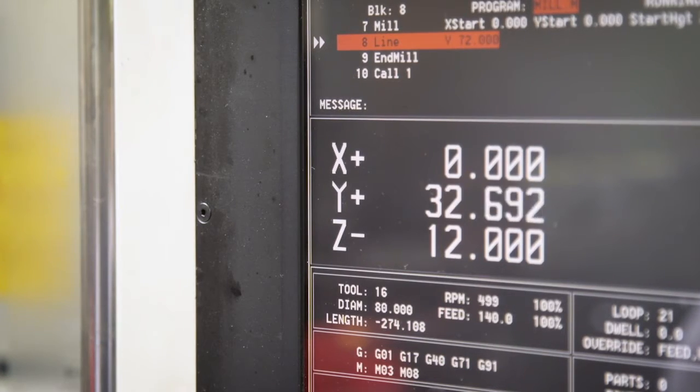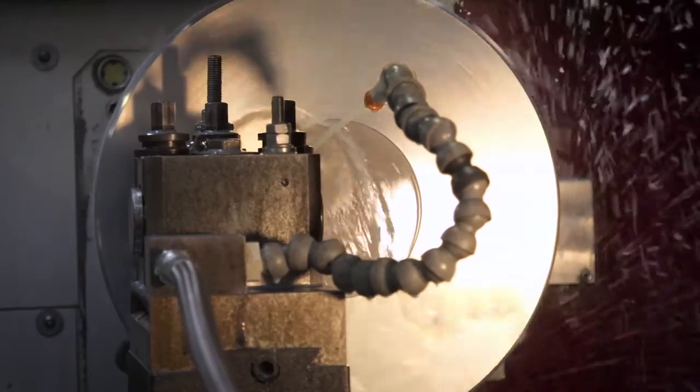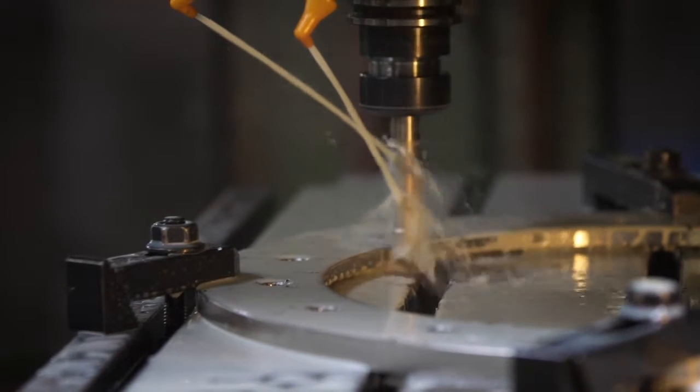Whilst the autoclave chamber takes shape, other parts of the workshop have also been busy. CNC multi-spindle lathes and milling machines produce the various smaller items that make up the finished build of a cylindrical autoclave.